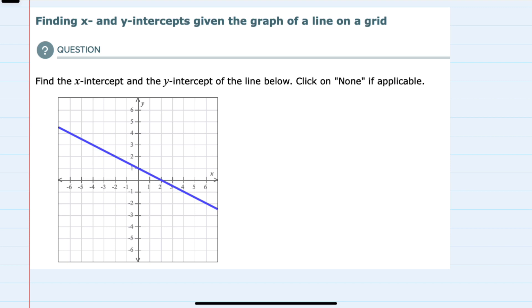So we're asked to find both x and y-intercepts. I'll start with the x-intercept, which is where the line crosses the x-axis. That happens right here. So that point, the x-intercept, is the point (2, 0). Notice that for the x-intercept, the y-value will always be 0, because it's on the x-axis.